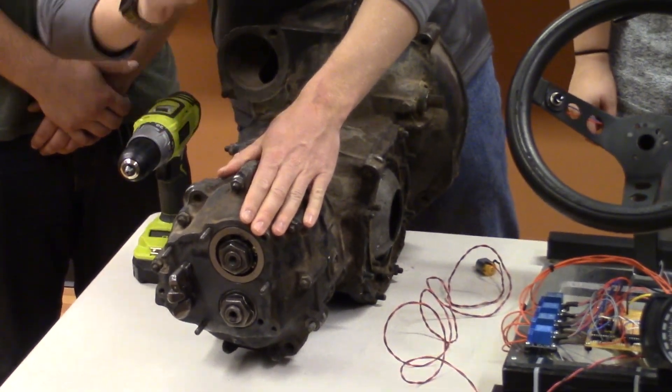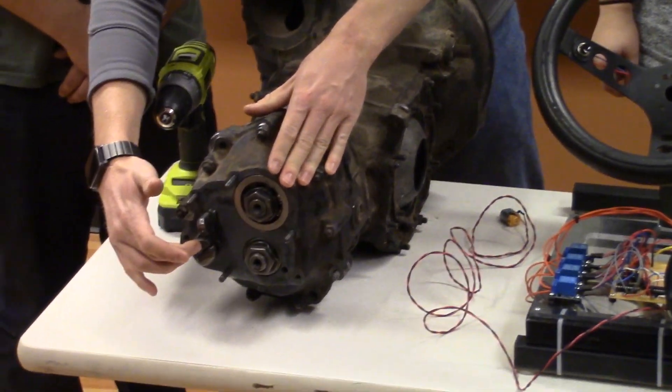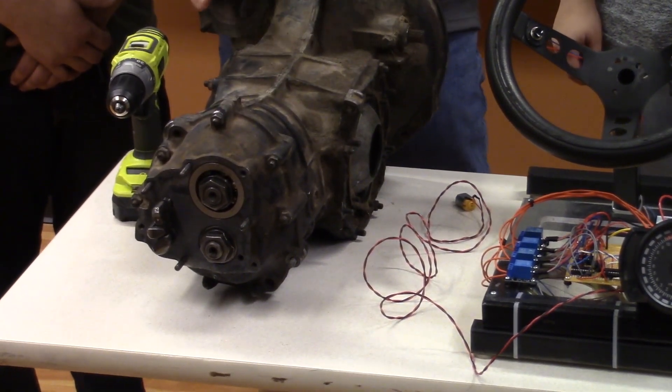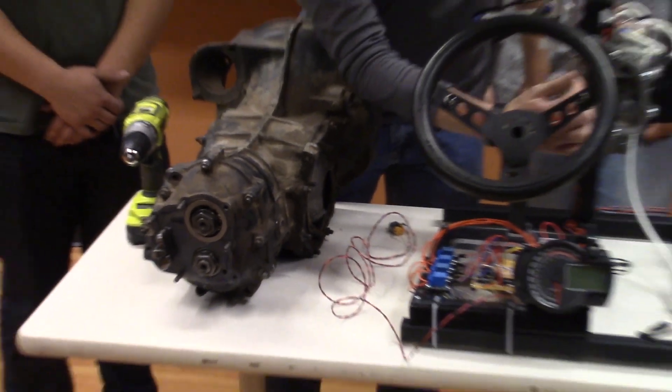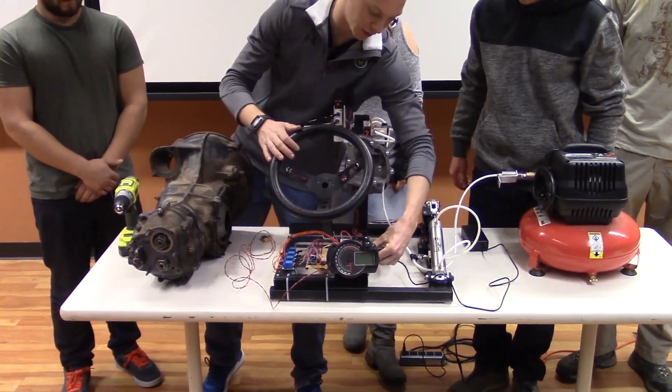So one is all the way in, two is all the way out, neutral is right there, and then this would be three and four. And one of these only moves one direction and that's reverse. How that's shifted is there's a little arm in here. We're gonna turn it on without air really quickly so you can see.